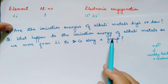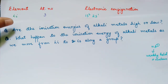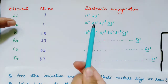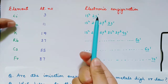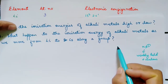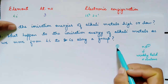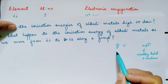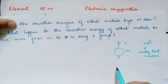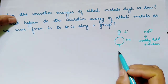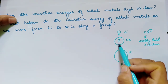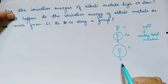What happens to the ionization energy of alkali metals as we move from lithium to cesium along the group? Again, have a look at the electronic configuration. As we move down the group, we see that the distance of the valence electron from the nucleus keeps on increasing. Suppose this is the distance of the valence electron in the case of lithium. Then, in sodium, it will be larger compared to that of lithium, because of the addition of more shells. And then for potassium, it will again be a larger distance of the electron from the nucleus.